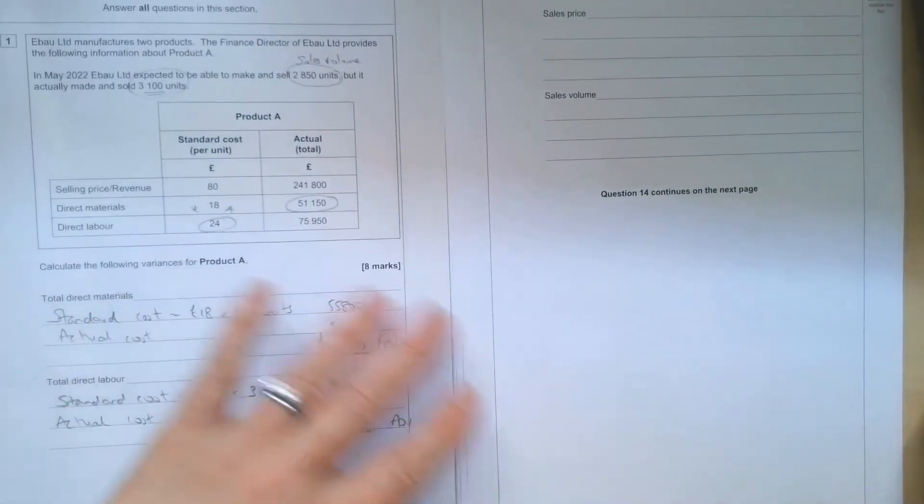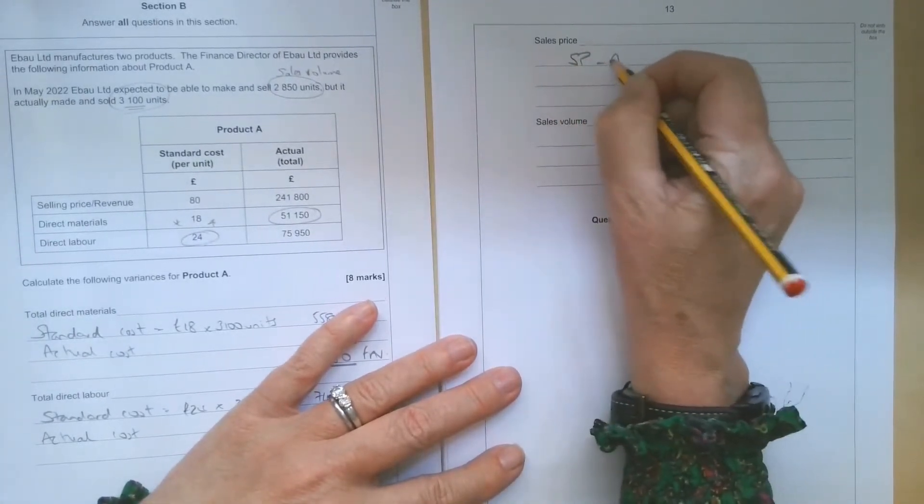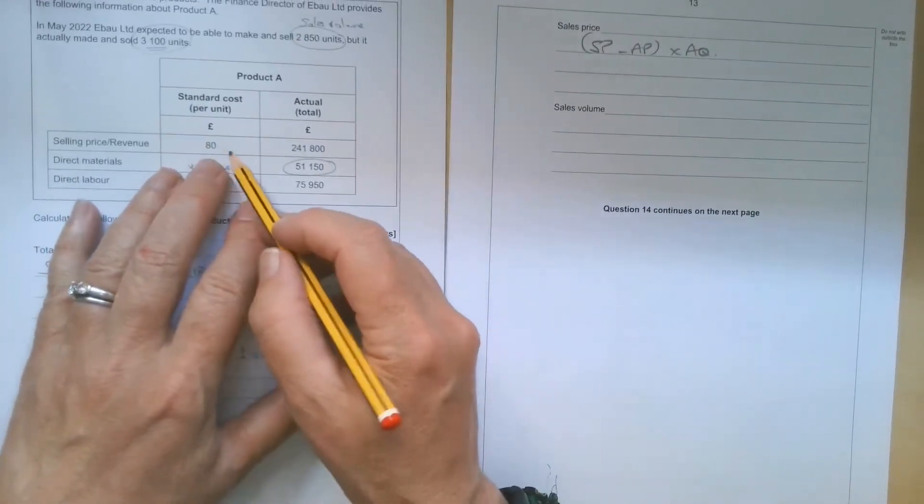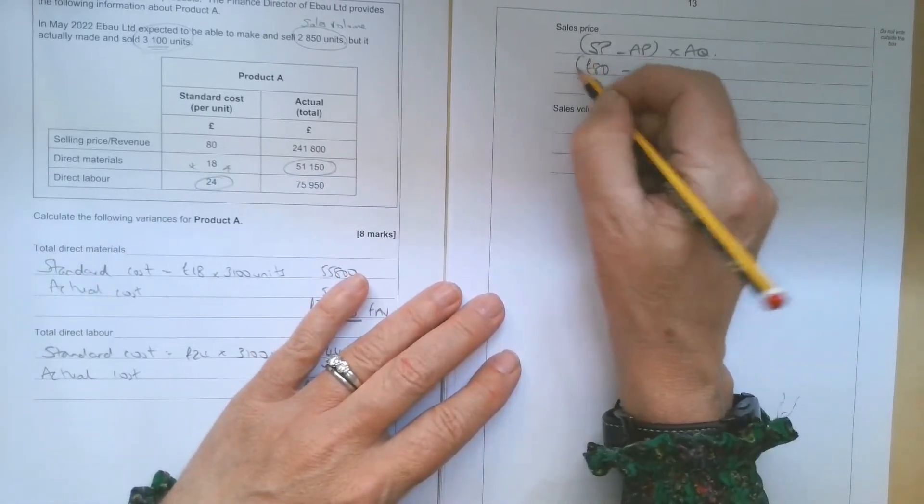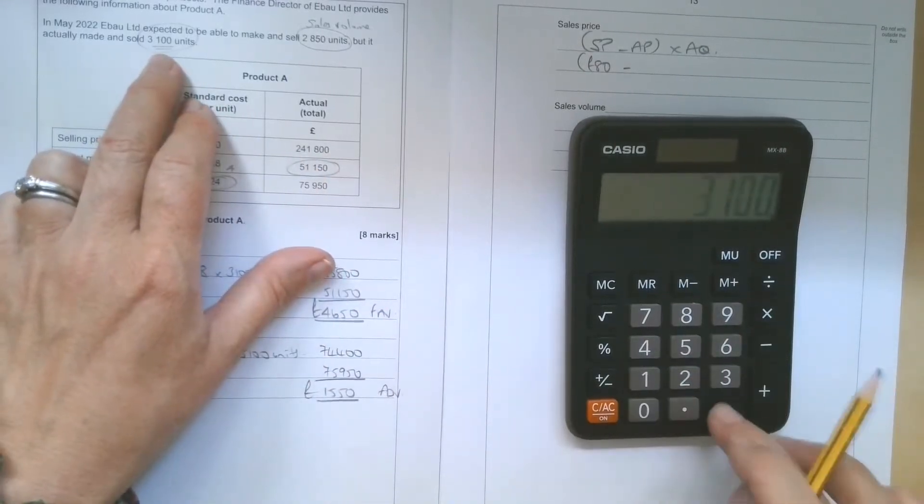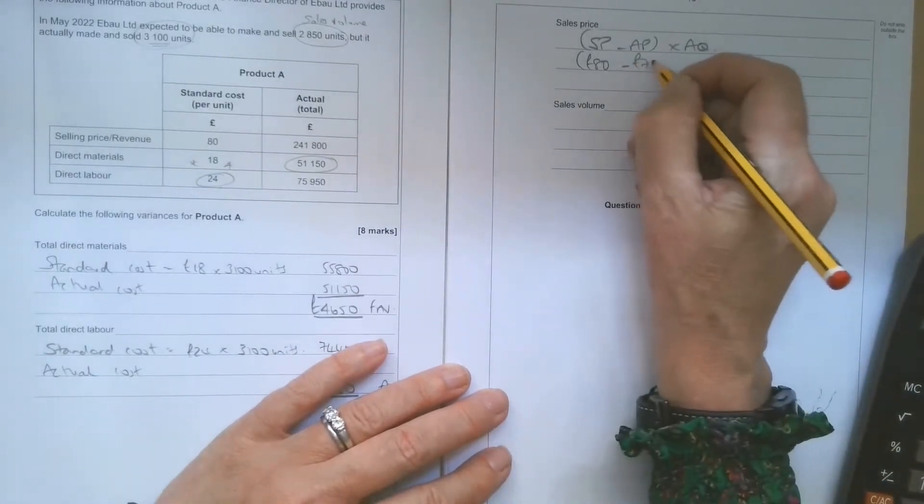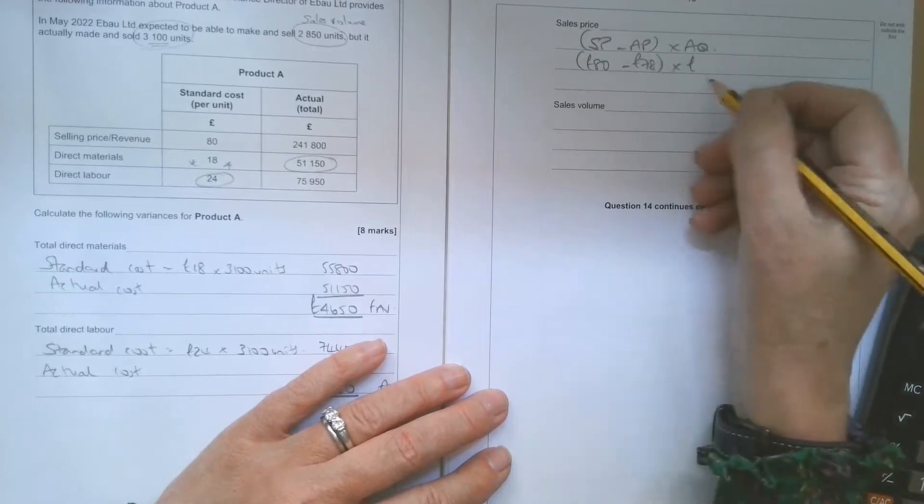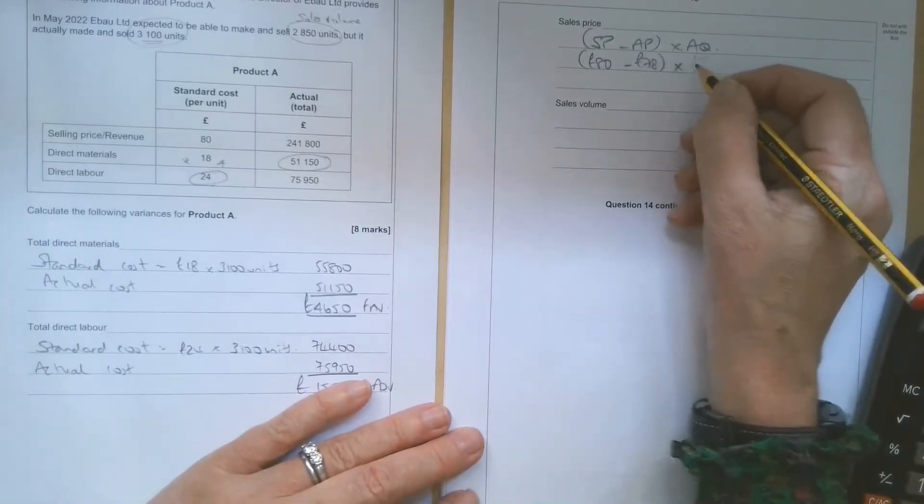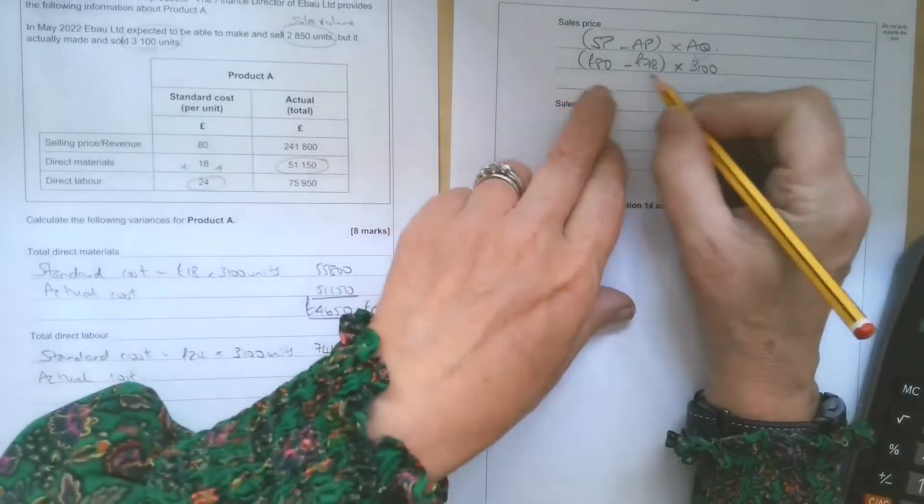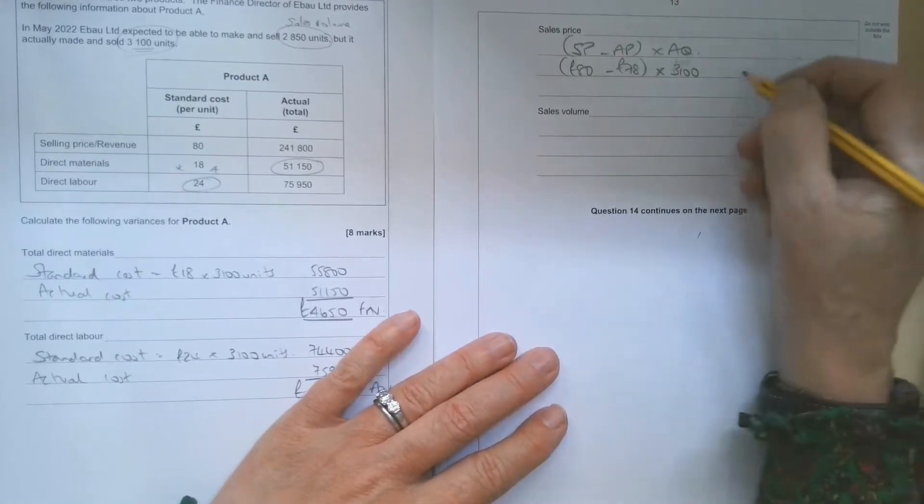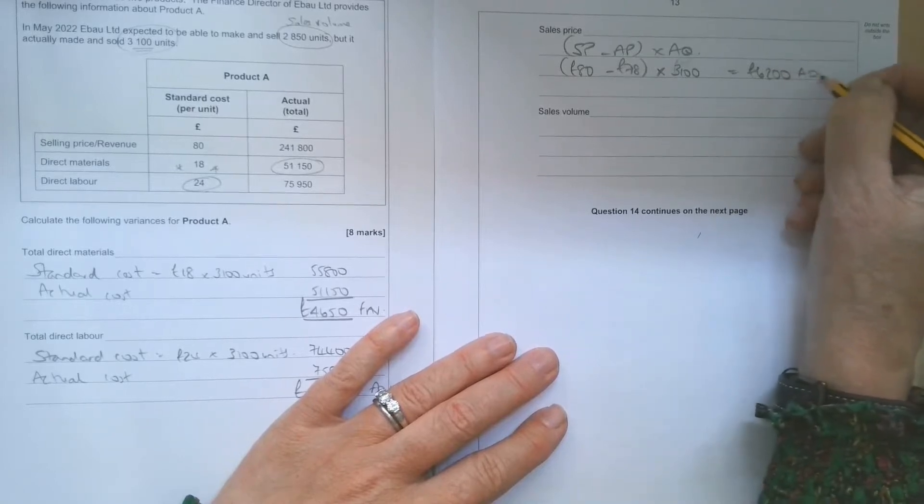The next variance we've got to work out is the sales price variance. So remember, with the sales price variance, it's the standard price minus the actual price times the actual quantity of units sold. The standard price gives us here £80. The actual price we're going to have to work out. So it's £241,800 divided by the 3,100 units we actually sold. So that is £78 per unit. And we're multiplying that by the actual number of units. So each unit sold for £2 less than the standard. So this is going to be an adverse variance of £6,200.